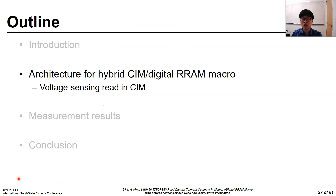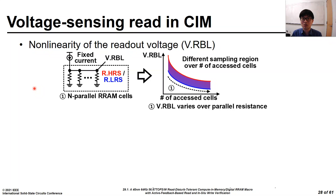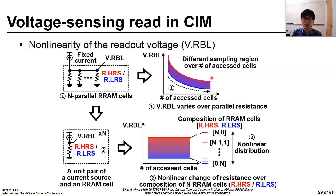Now I will explain the voltage sensing read operation in CIM. To obtain the CIM outputs in a voltage sensing RRAM macro, the non-linearity of the reader voltage should be addressed. In the case of a fixed amount of the bitline current, the reader voltage drastically decreases over the number of accessed RRAM cells due to the parallel resistance. To overcome the non-linearity, current control concerning the number of accessed RRAM cells is desirable. Thus, the input-aware current control is employed by composing a unit pair of a current source and an RRAM cell. Then, the reader voltage has a constant region over the number of accessed RRAM cells.